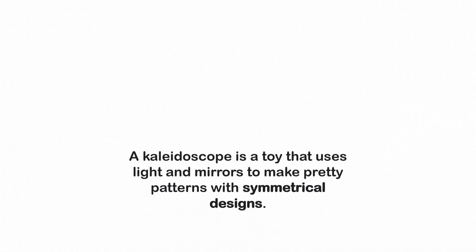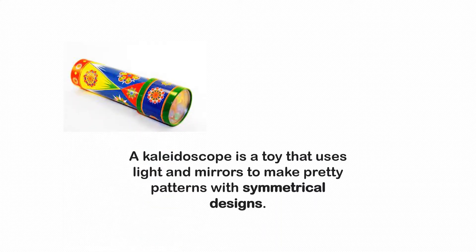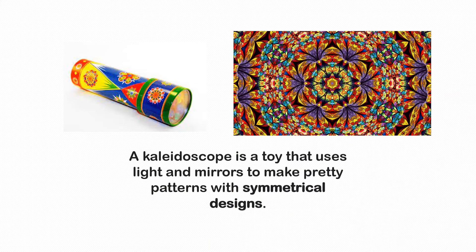Have you all seen a kaleidoscope? A kaleidoscope is a toy that uses light and mirrors to make pretty patterns with symmetrical designs. This is a kaleidoscope, and when we see through it and rotate it, we can see beautiful patterns made out of it. One important thing is that every time we rotate it, we see a new pattern — the pattern does not get repeated. This is one benefit of the kaleidoscope, and it is used for making wallpapers and many other designs in our day-to-day life.